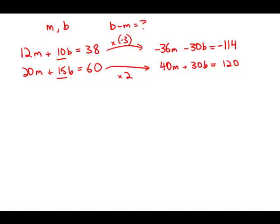114 is 3 times 38. So now I can simply add these two equations together and I wind up with 4M. This plus zero, the 30B's cancel, equals 6. So four maps would equal $6.